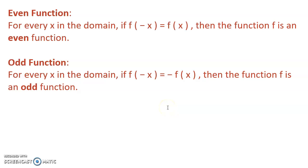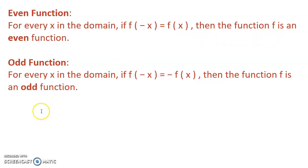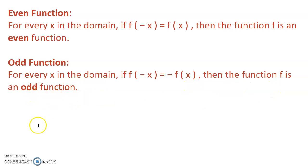Here are the definitions. For every x in the domain, if f of negative x is equal to f of x, then the function f is an even function. Similarly, for every x in the domain, if f of negative x is equal to negative f of x, then the function is an odd function.